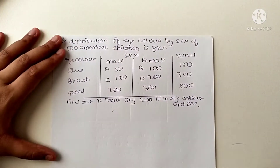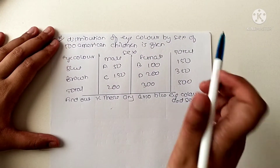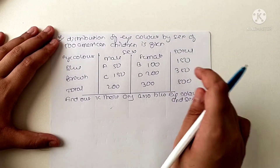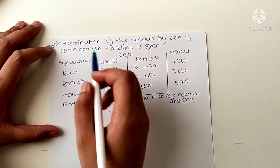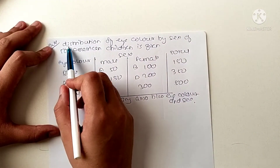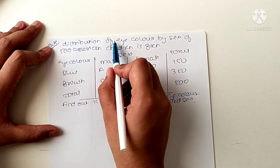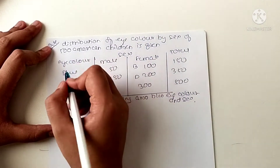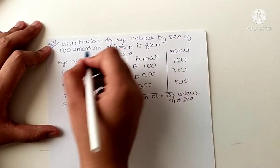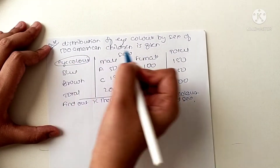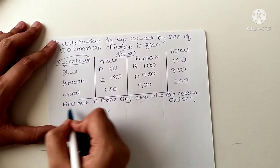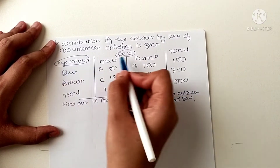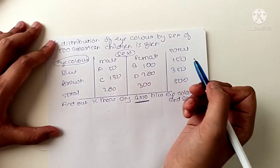In this video we will see how to do the chi-square test in biostatistics or PSM. The question is: the distribution of eye color by sex of 500 American children is given in a table. We have to find out if there is any association between eye color and the sex of the children.